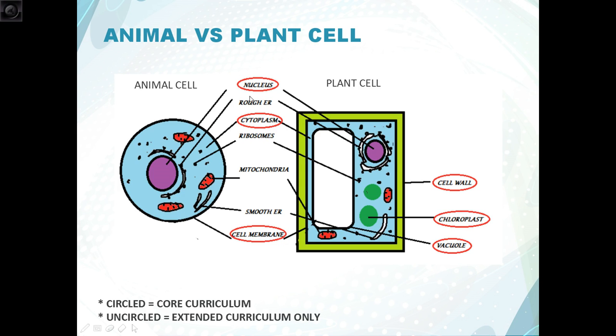So the first thing you need to be able to do is differentiate between an animal cell and a plant cell. You need to be able to identify and state the functions of each of the structures present in each cell and it might be easiest to think about it like this. Plant cells have everything that an animal cell does except a few extras such as cell walls, chloroplasts and vacuoles.